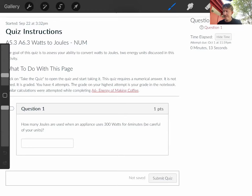Okay, so this question asks, how many joules are used when an appliance uses 300 watts for six minutes? Be careful of your units.